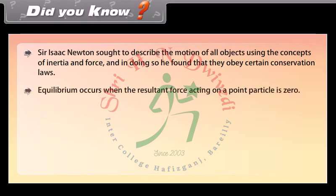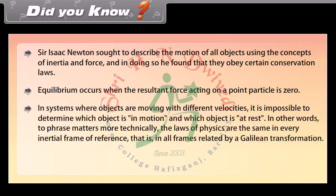Equilibrium occurs when the resultant force acting on a point particle is zero. In systems where objects are moving with different velocities, it is impossible to determine which object is in motion and which object is at rest. In other words, to phrase matters more technically, the laws of physics are the same in every inertial frame of reference, that is, in all frames related by a Galilean transformation.